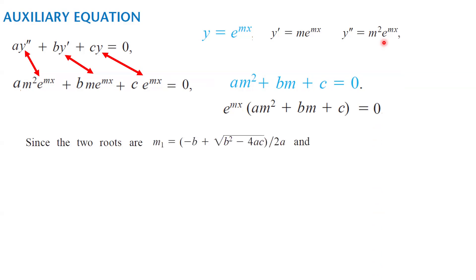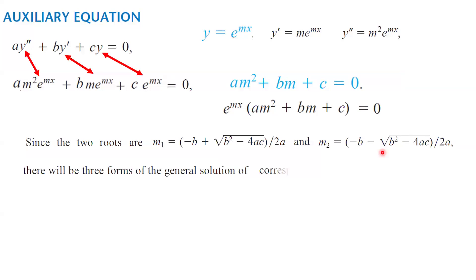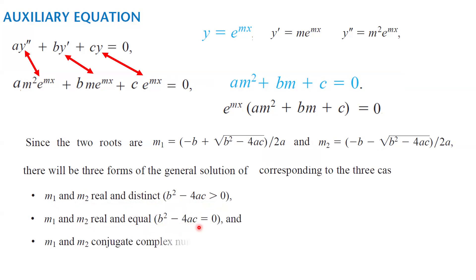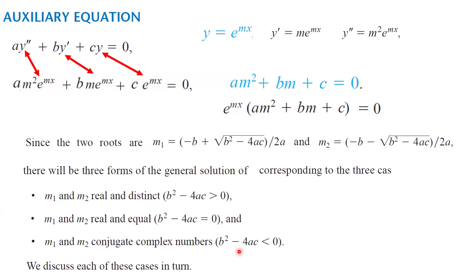The two roots are m₁ = (−b + √(b²−4ac)) / 2a and m₂ = (−b − √(b²−4ac)) / 2a. There are three scenarios: Case 1 — m₁ and m₂ are distinct real numbers, when the discriminant is positive; Case 2 — m₁ and m₂ are equal real numbers, when b²−4ac = 0; Case 3 — m₁ and m₂ are complex conjugates, when b²−4ac is negative. Each case yields solutions forming the general solution of the differential equation.